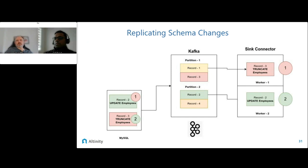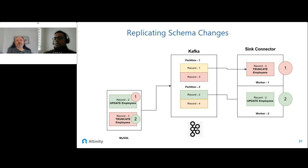Let's talk about the ALTER TABLE support we've been working on. One of the problems with the Kafka Connect framework and Debezium is that DDLs in Kafka Connect come in as a separate topic. When consuming records from Kafka, if you have an UPDATE employees and then a TRUNCATE employees, if you read them out of order you'd truncate employees first and then try to update employees, which breaks your pipeline. With our new architecture that does not have Kafka, we can actually read these records in sequence and guarantee we write these events in the correct order. I'm going to do a quick demo.